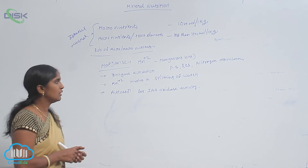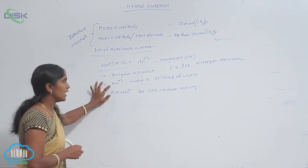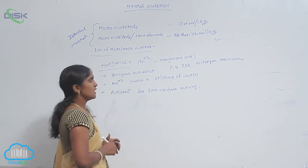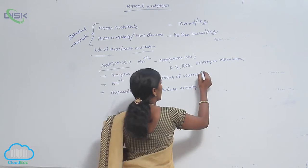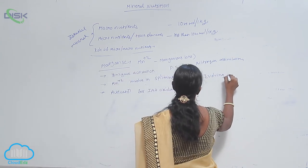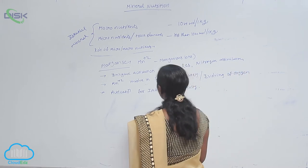This is mediated by Mn+2. This means the Mn+2 ions play a key role in splitting of water and evolving of oxygen during photosynthesis.